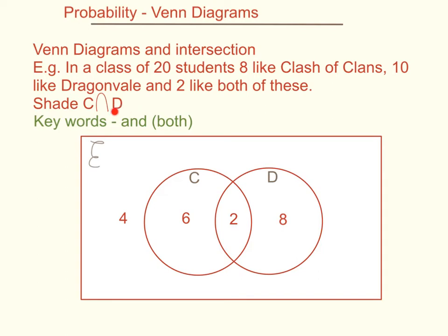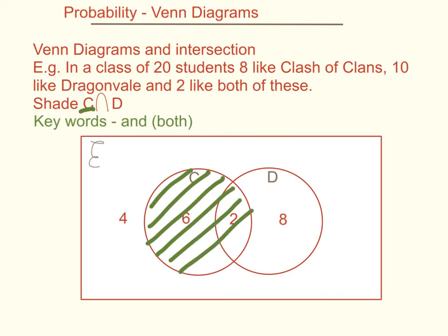In this example, we find C intersection D — the things that are in C and also in D. A good way to visualise this is to shade C in one direction and D in another direction, and see where they cross over. I'll shade C in green — everything inside that circle. Then I shade D. Where the two shadings cross over is the intersection. That crossing point in the middle is the intersection of C and D.